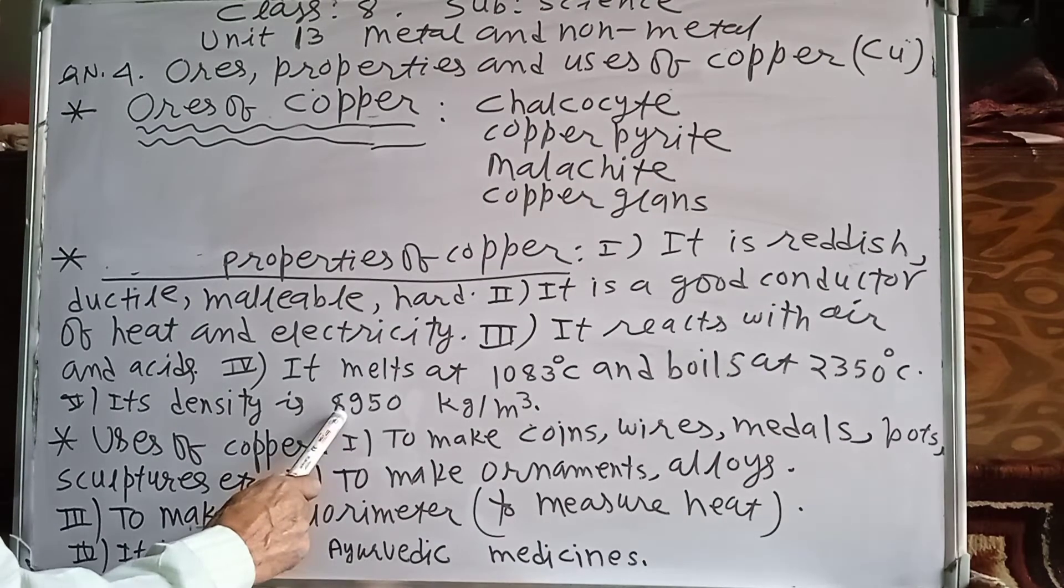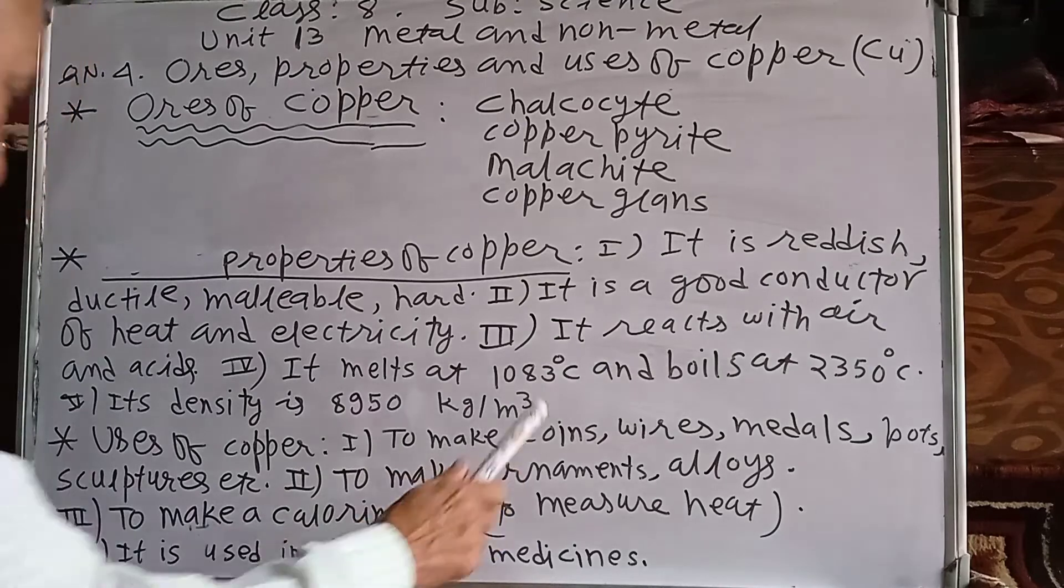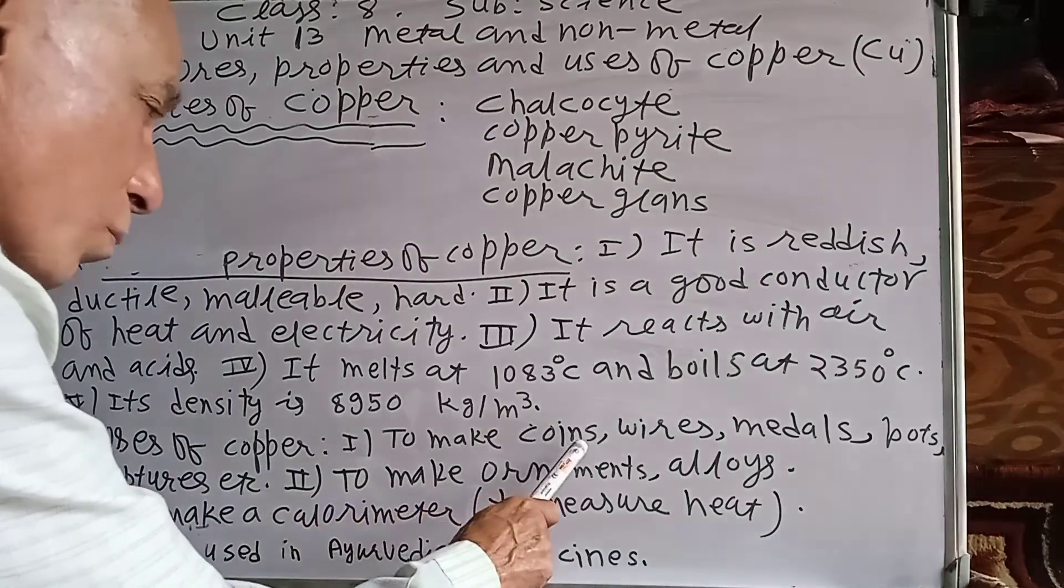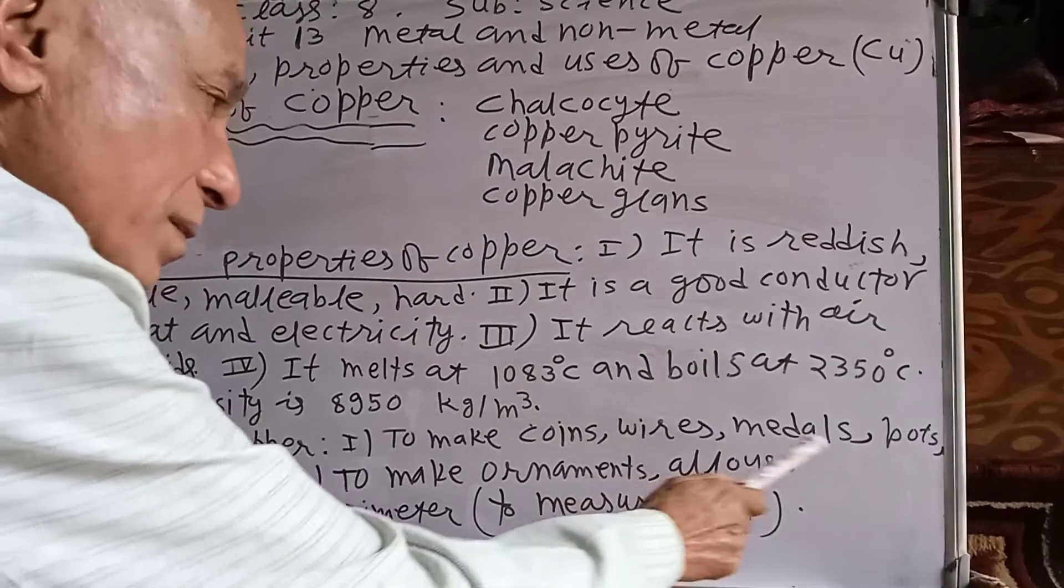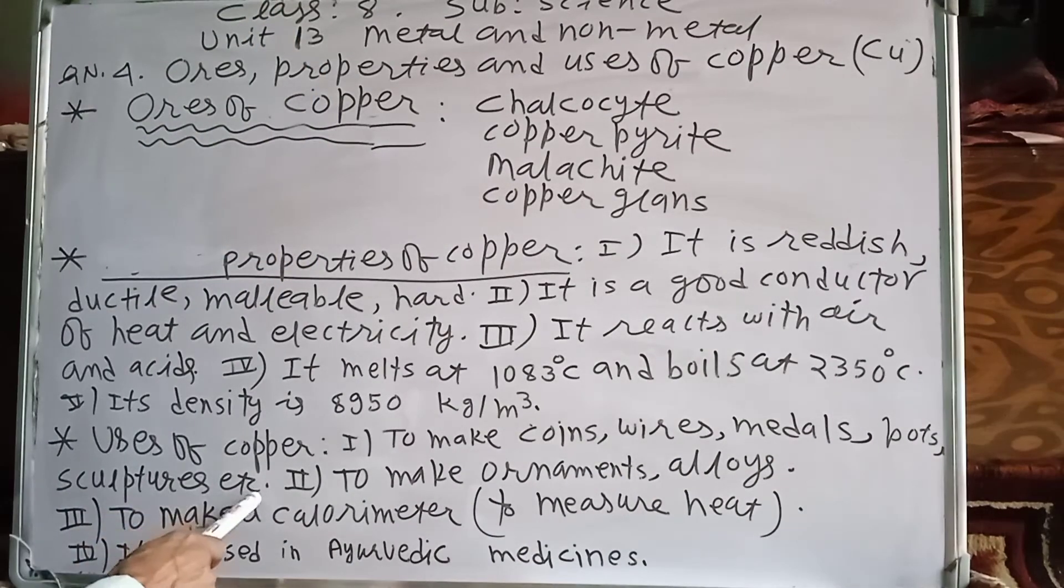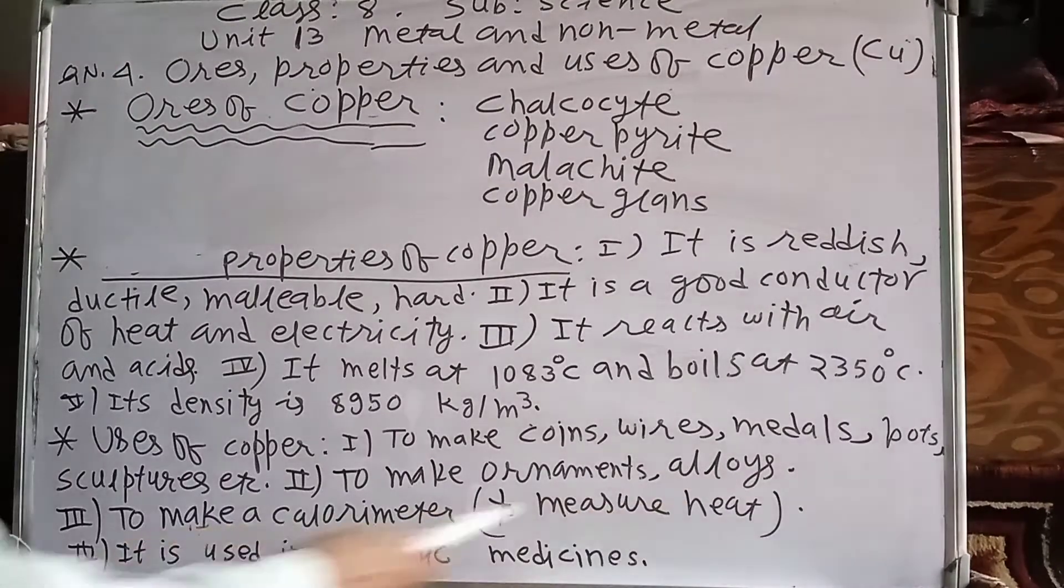Usage of copper to make coins, wires, medals, pots, sculptures, etc. Two, to make ornaments, alloys like brass, bronze.